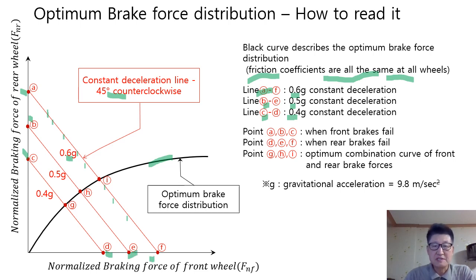That is based on the requirement that the front brakes take charge of all the brake forces when the rear brake fails. Of course, g is the gravitational acceleration, equal to 9.8 meters per second squared.